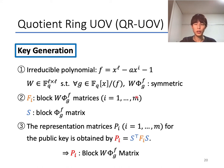Now we explain the key generation of our proposed scheme, QR-UOV. First, we choose an irreducible polynomial f of the form x^ℓ minus a·x^{i-1}, and an ℓ times ℓ matrix W such that for any element g in the quotient ring, W·Φ_g^f is symmetric.